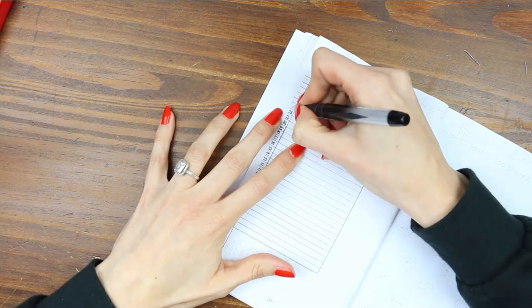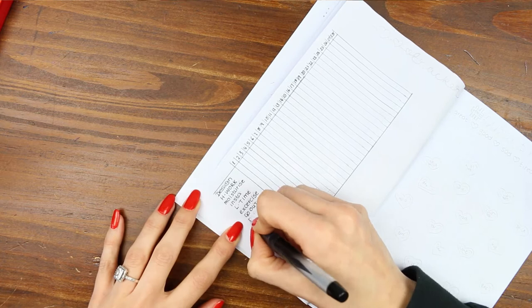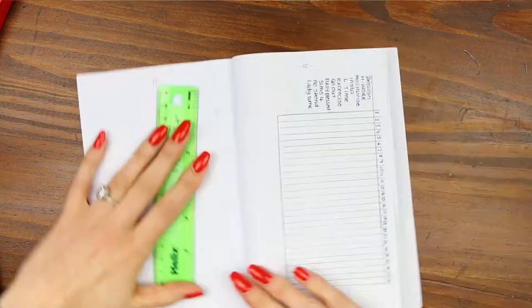And then when I'd written the dates on the top I just write down everything that I want to track throughout the month. Such as design, housework, playing sims because I need some me time, and all sorts of different things.